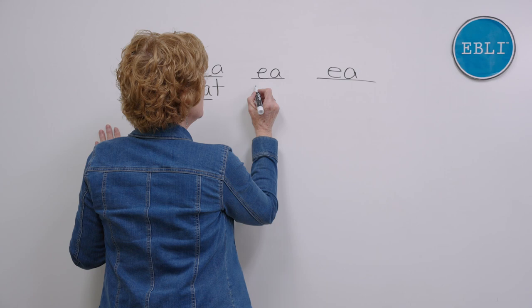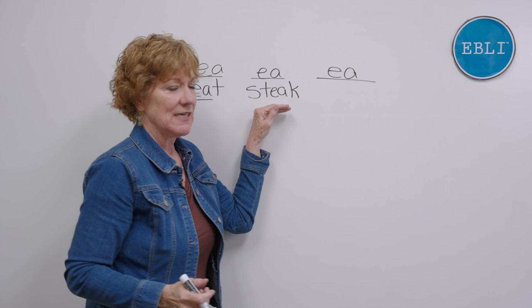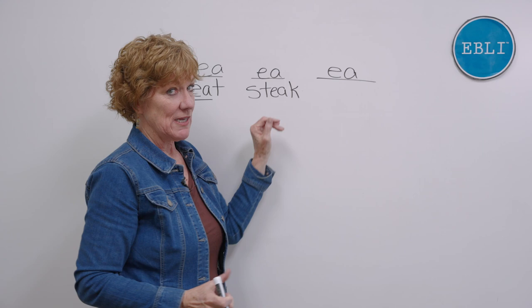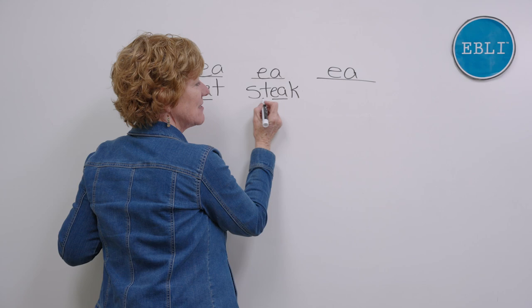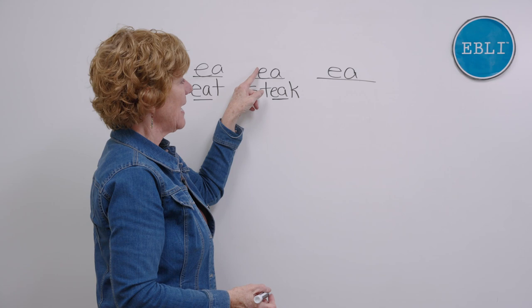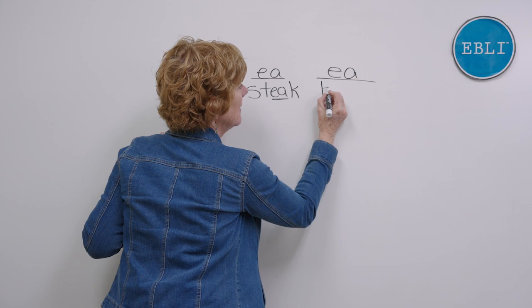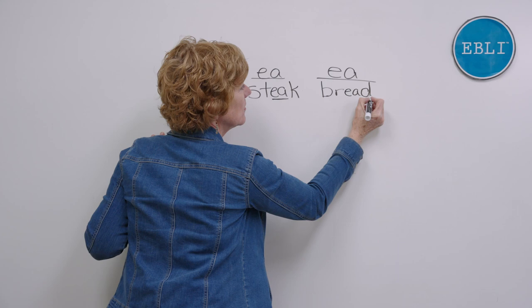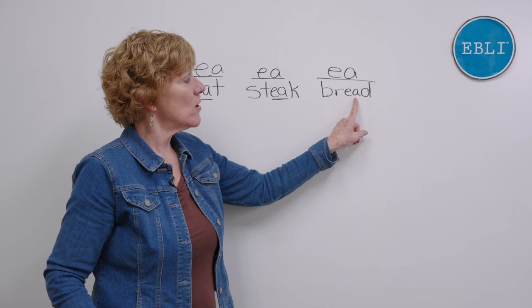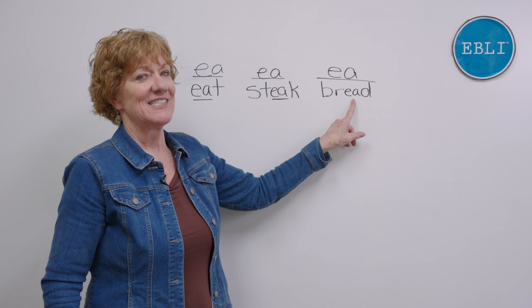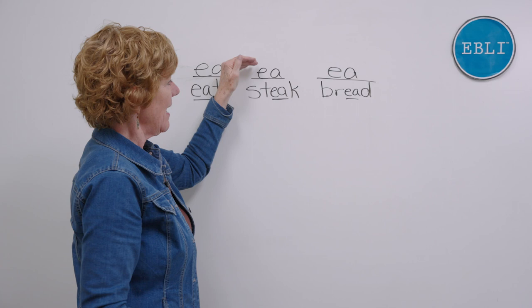Under the next one, say the sounds as you write the word 'steak' — the kind of steak that you eat. What sound do you say here in 'steak'? A. So this spelling can be 'e' as in 'eat' and 'a' as in 'steak.' Under the next one, say as you write the word 'bread' — be sure your b is a bat-then-a-ball and your d is a doorknob first. What sound do you say right here in 'bread'? That's right — so this exact same spelling can be 'e' as in 'eat,' 'a' as in 'steak,' and that short sound as in 'bread.'